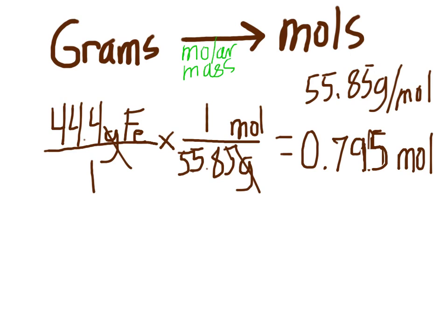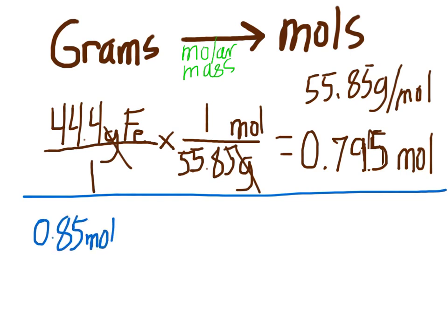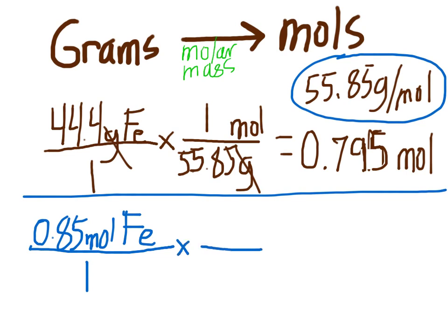Now, let's say we're wanting to go from moles to grams. Let's say you had 0.85 moles of iron. We'll use iron since we have the molar mass up here. Remember, it doesn't really matter what we use, you'll just look up the molar mass. So we put it over one, and it's the same process, except this time since moles is on the top, we're going to put moles on the bottom, and what we want is grams, so we'll put that on the top.